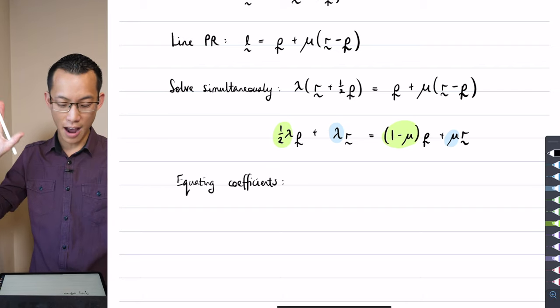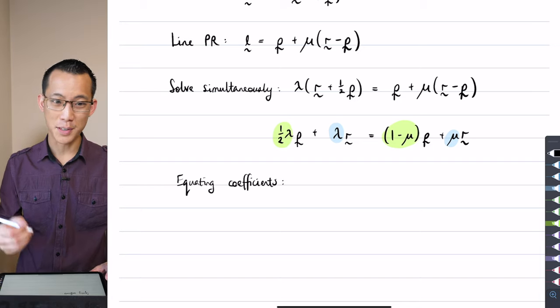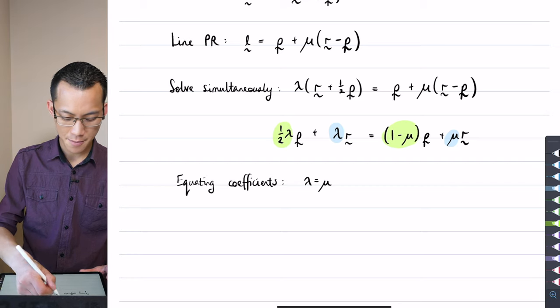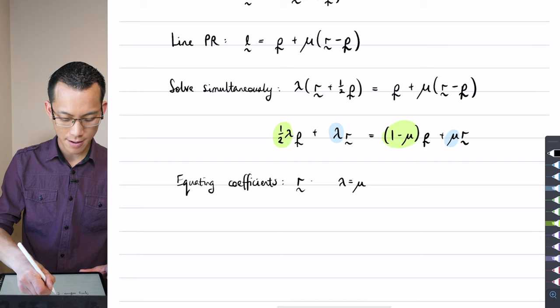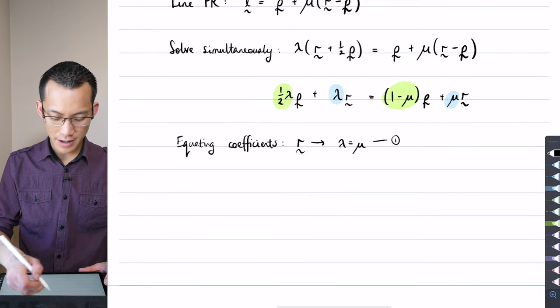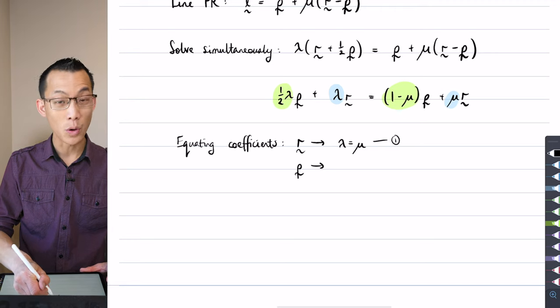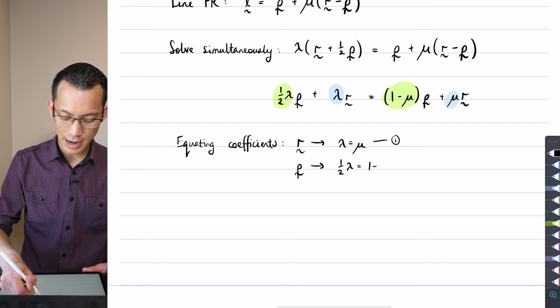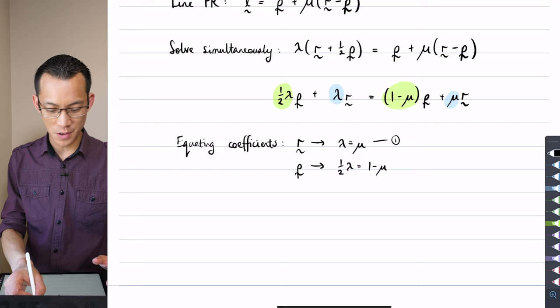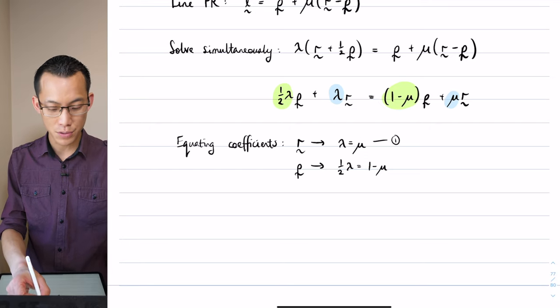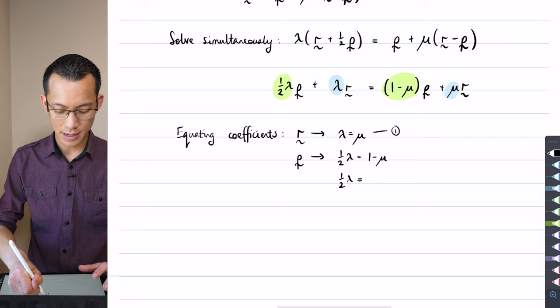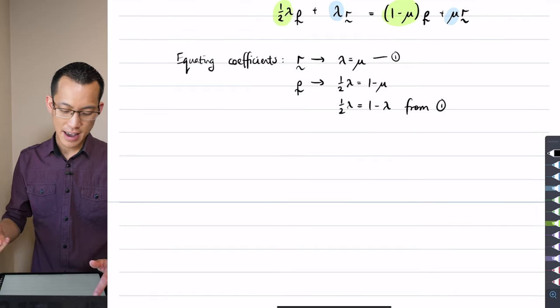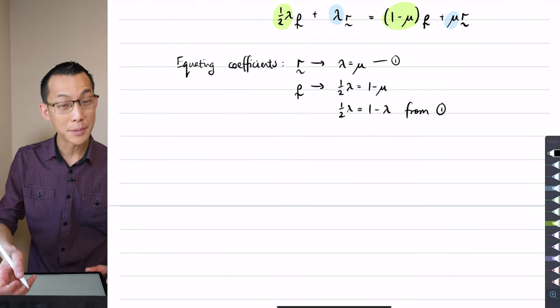Let's do the blue ones first because they're pretty easy. Lambda is going to equal mu, and I should say I get that from the r vectors. Let's call that equation one. Then from the p vectors, what do I get? On the left-hand side I've got half lambda, on the right-hand side I've got one takeaway mu. And now I can use this result that I just—I can substitute in here. I can get rid of the mus and get half lambda here and one minus lambda from equation one above. From here, I'm almost home.